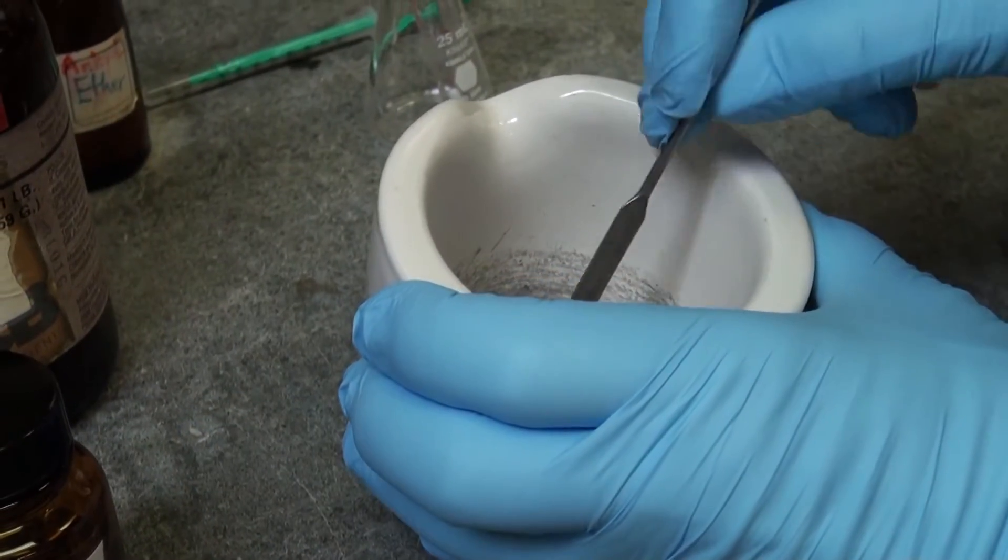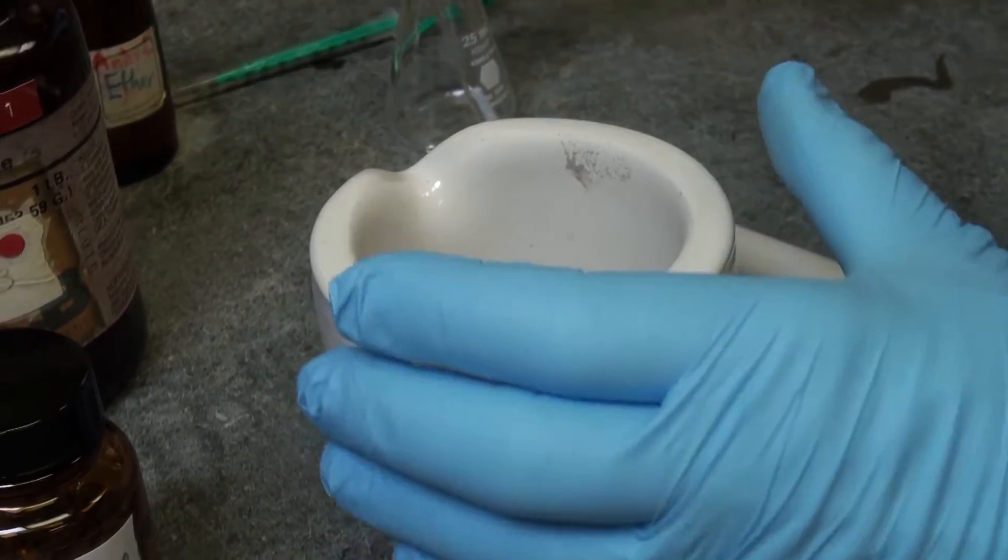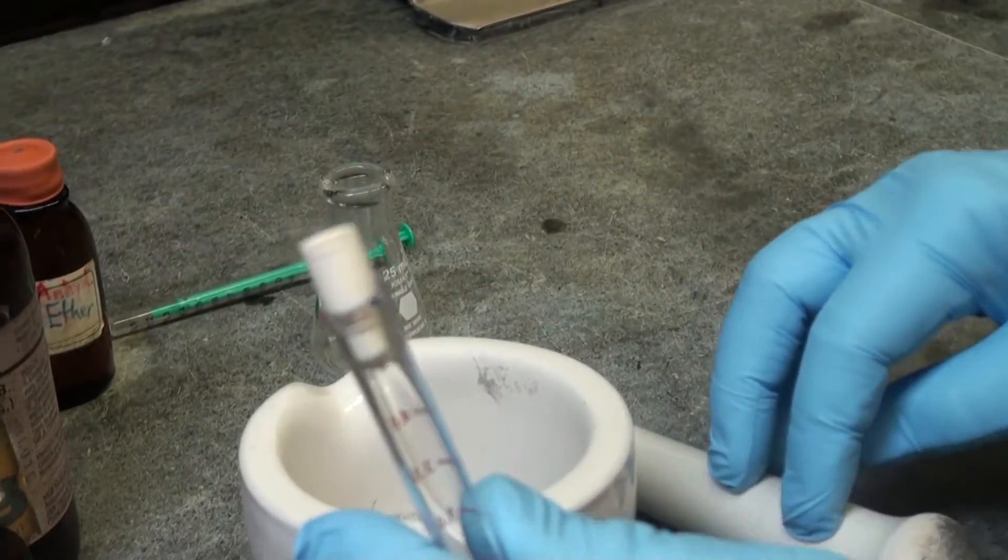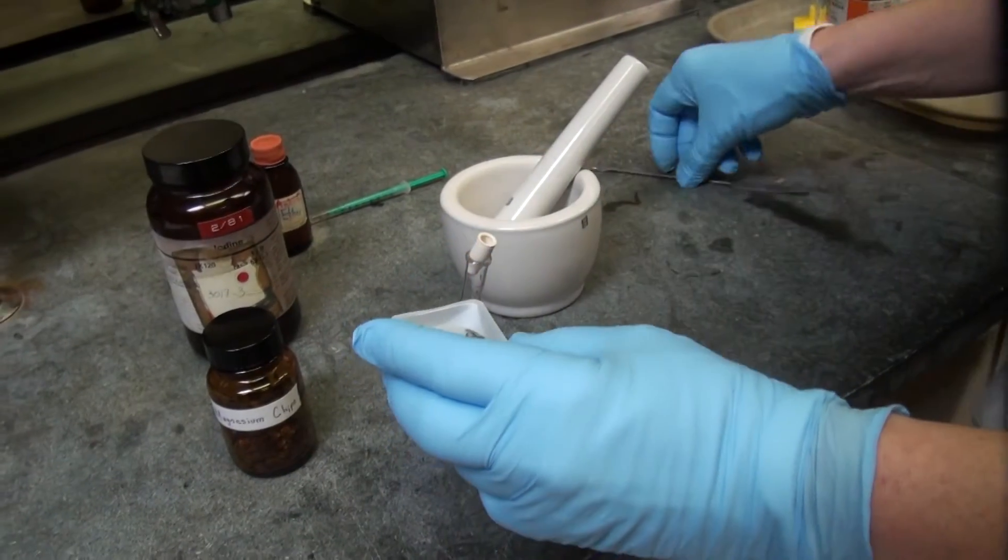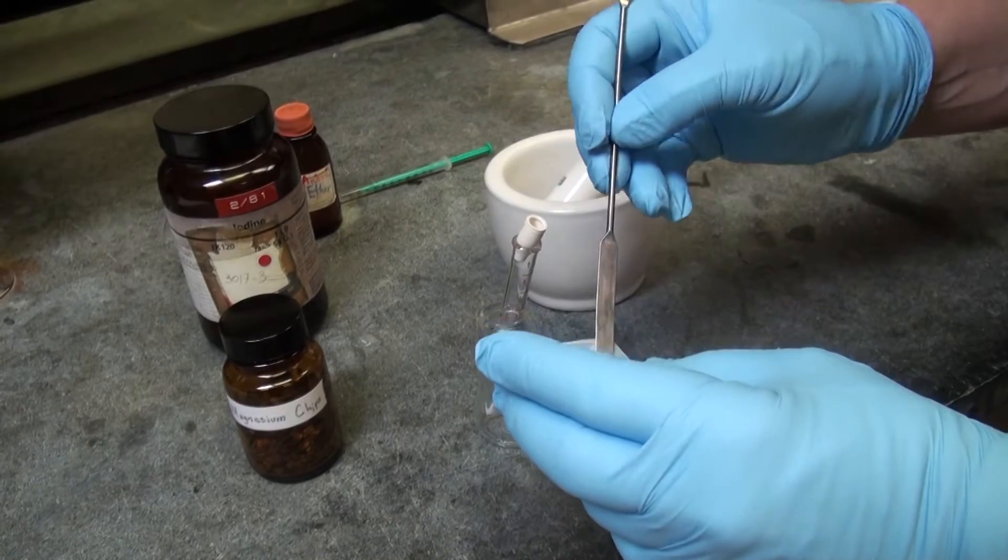Take the amount you have to take, weigh it with a weighing boat and put it in your reaction tube, which is now room temperature. Try to use the smaller pieces of the magnesium so that you have a bigger surface area.